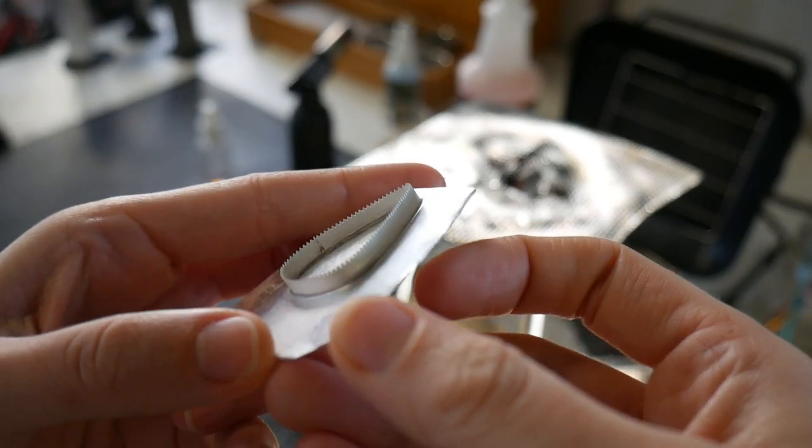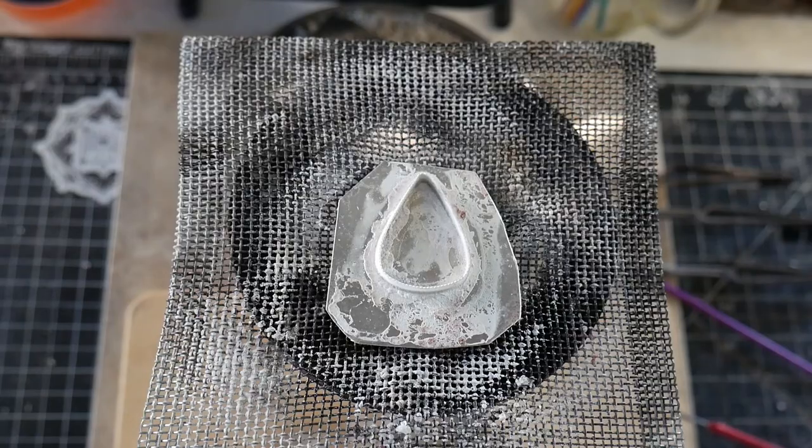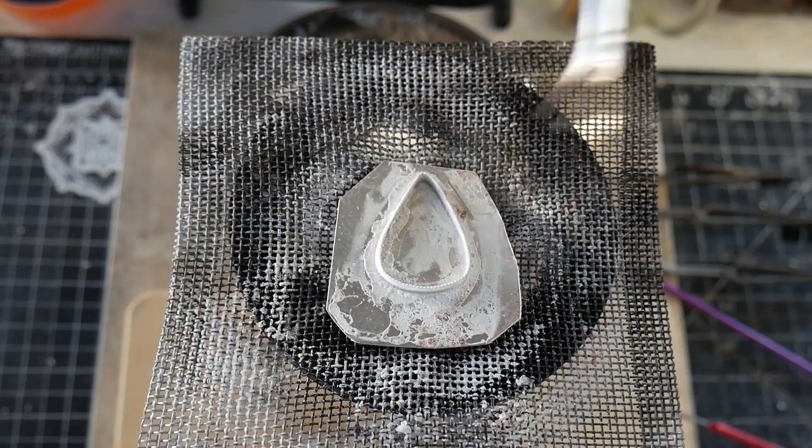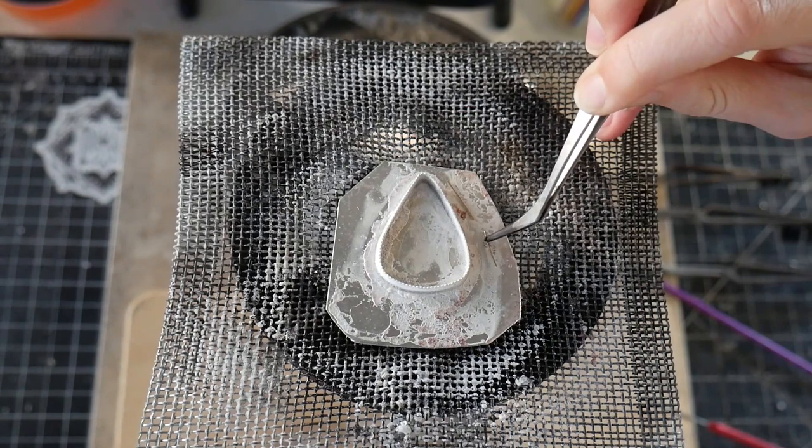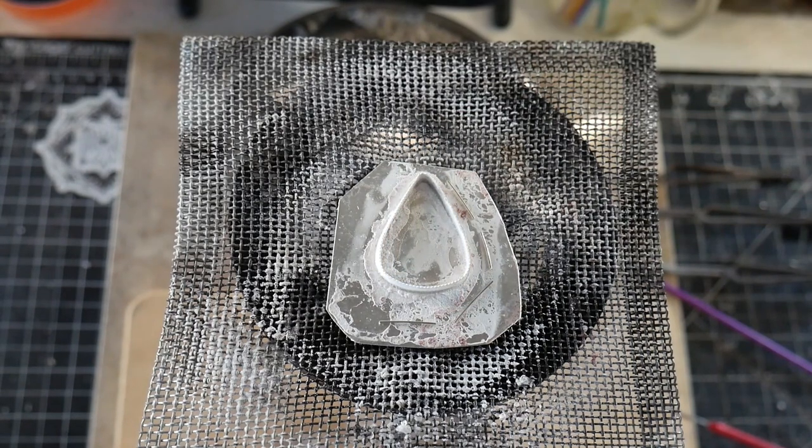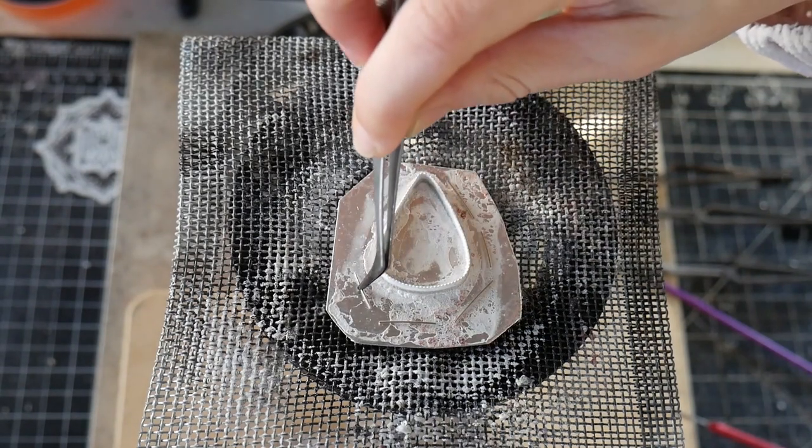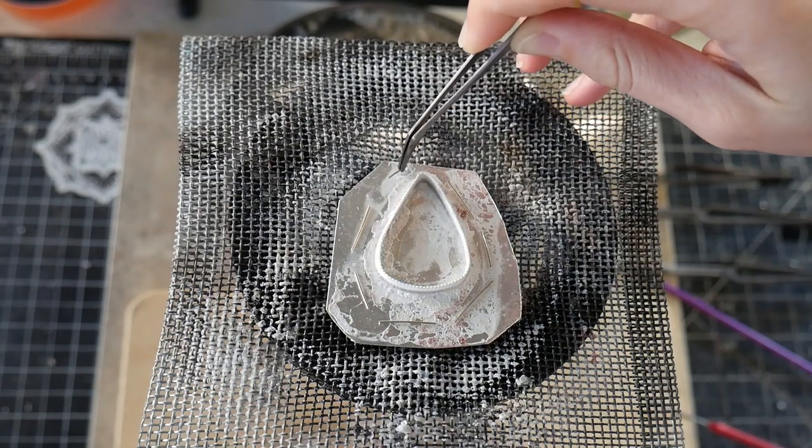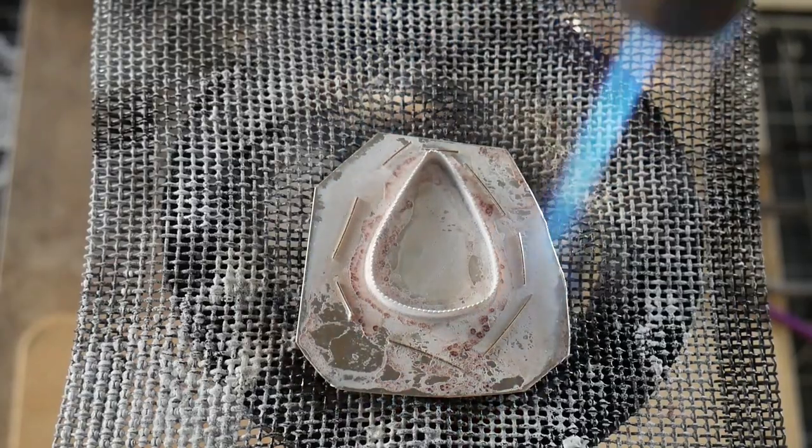As you can see, we had a successful solder operation for the bezel. Now what I'm going to do is just take easy solder wire and place it around the bezel. I'm going to be doing this to sweat solder my decorative embellishments to the back plate.